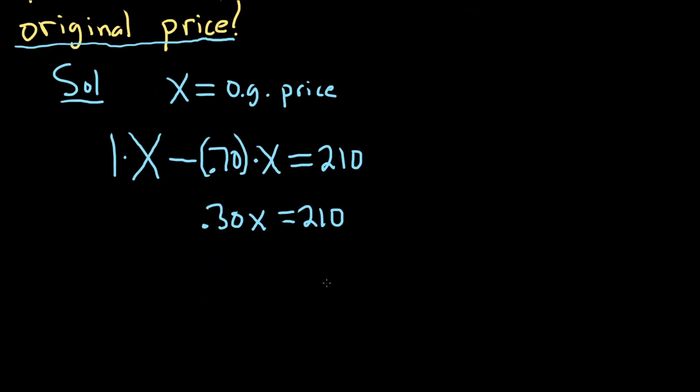Because it's being multiplied by 0.30, and we have to solve for X, we do the inverse operation of multiplication, which is division. So divide by 0.30, divide by 0.30.